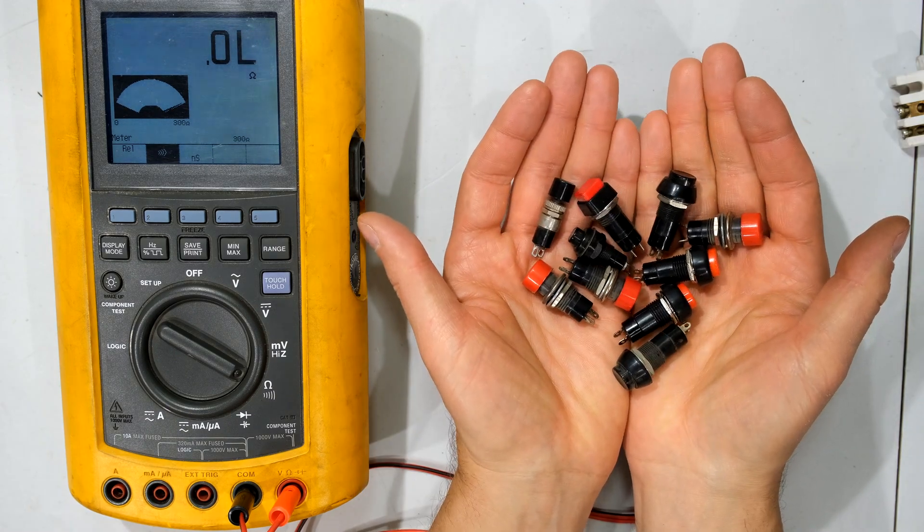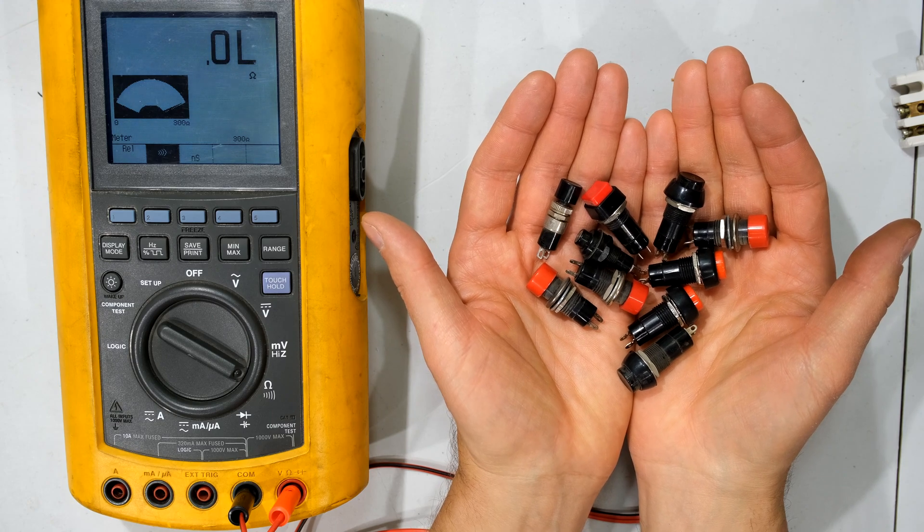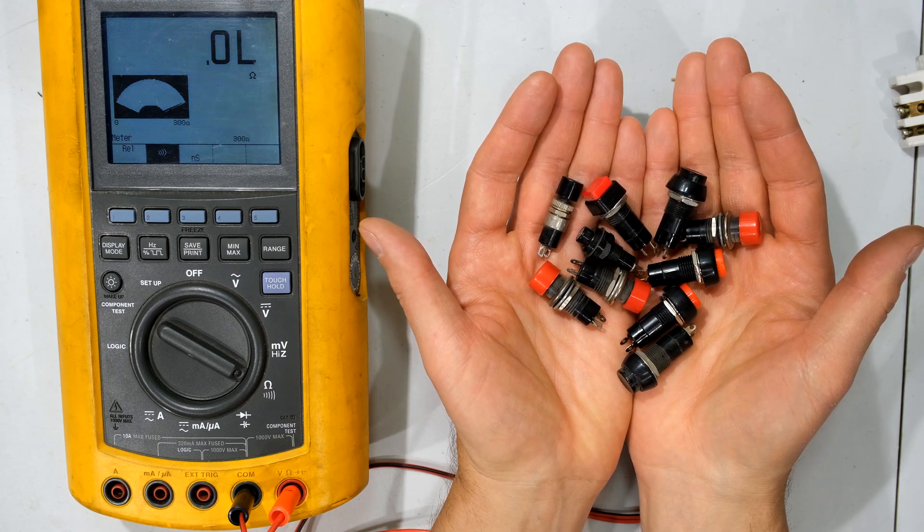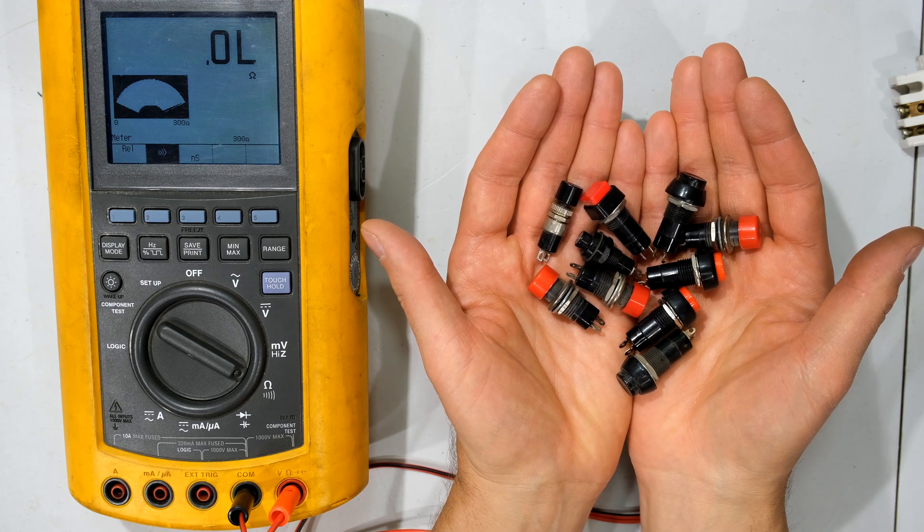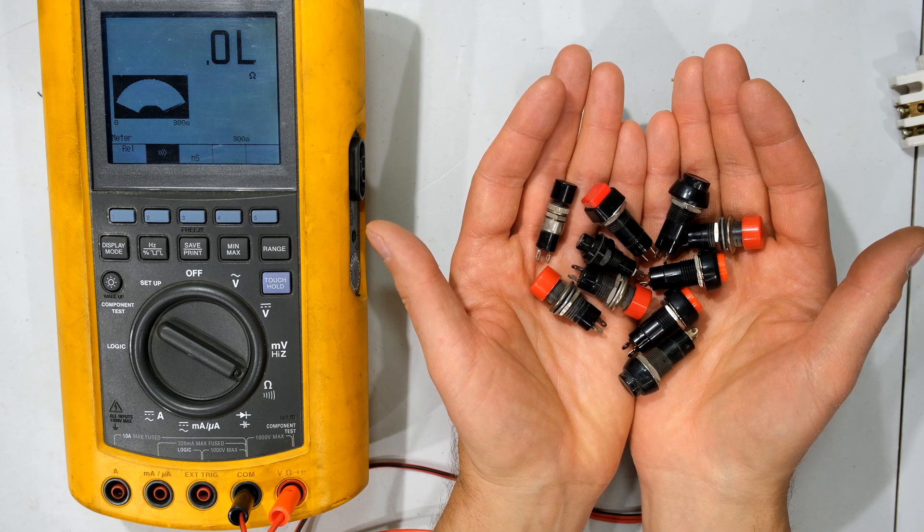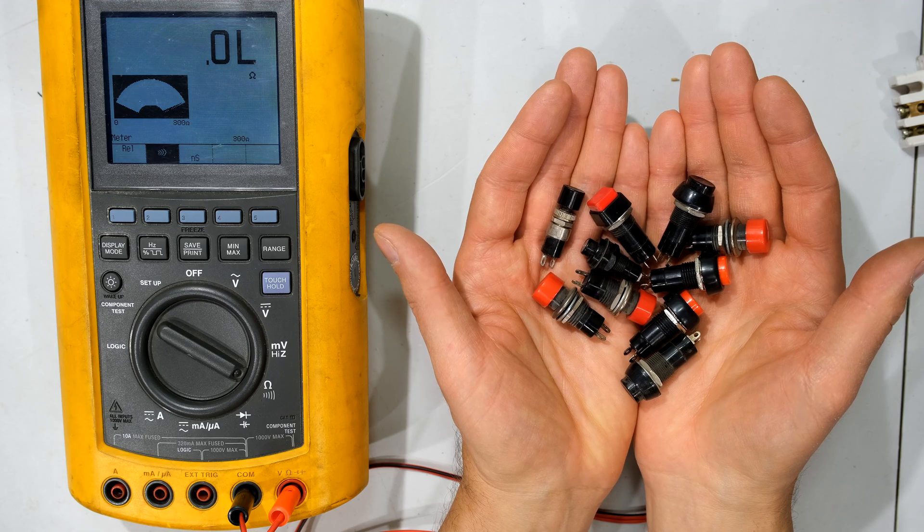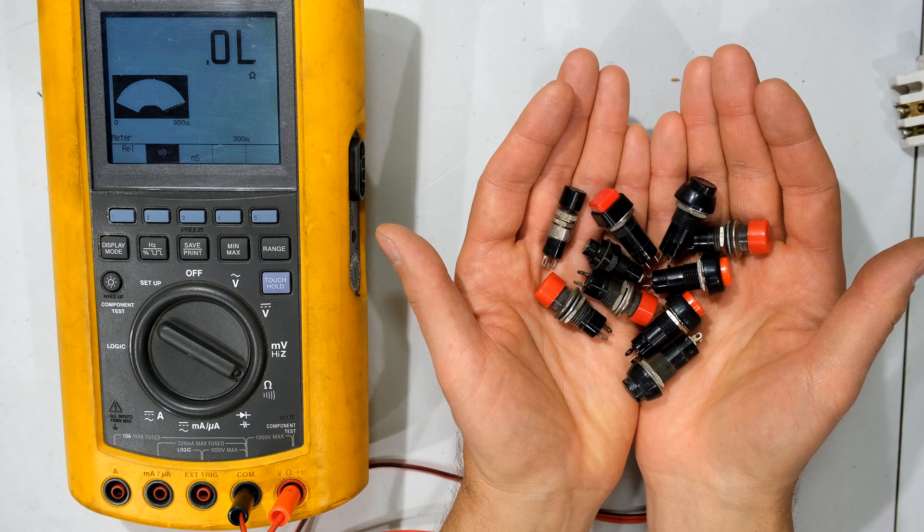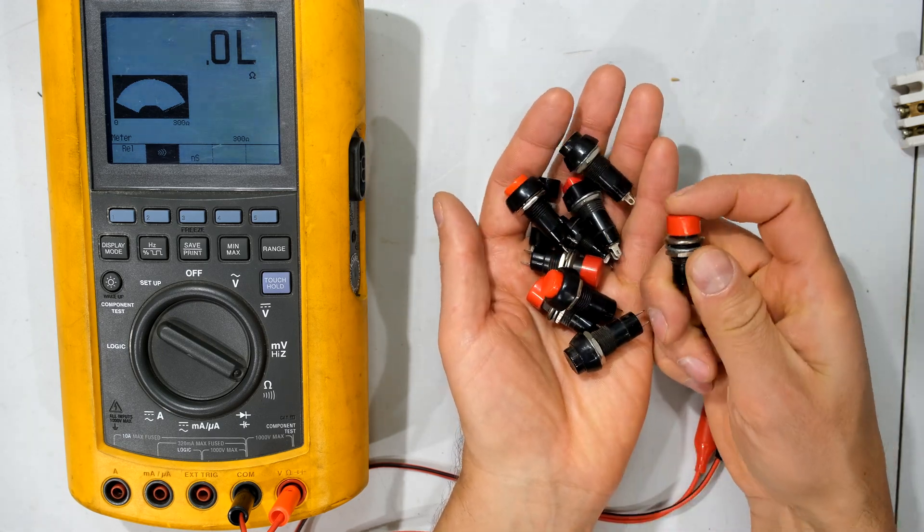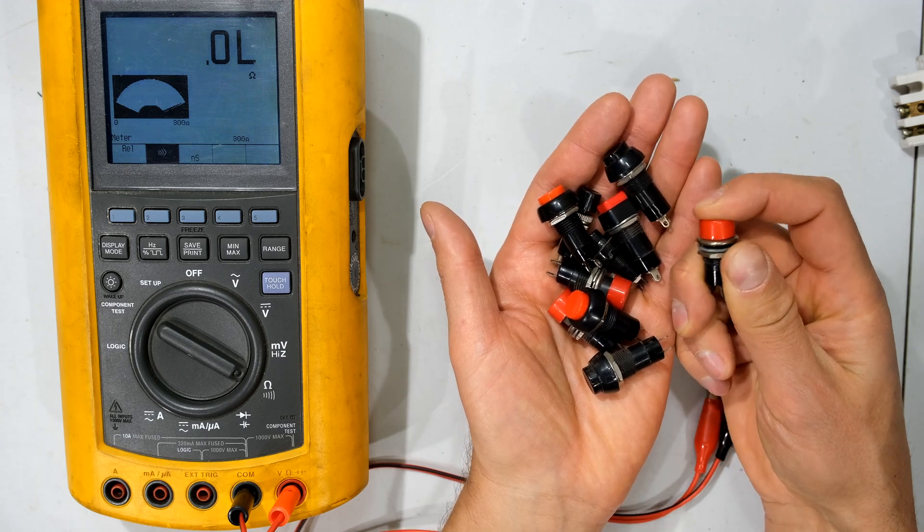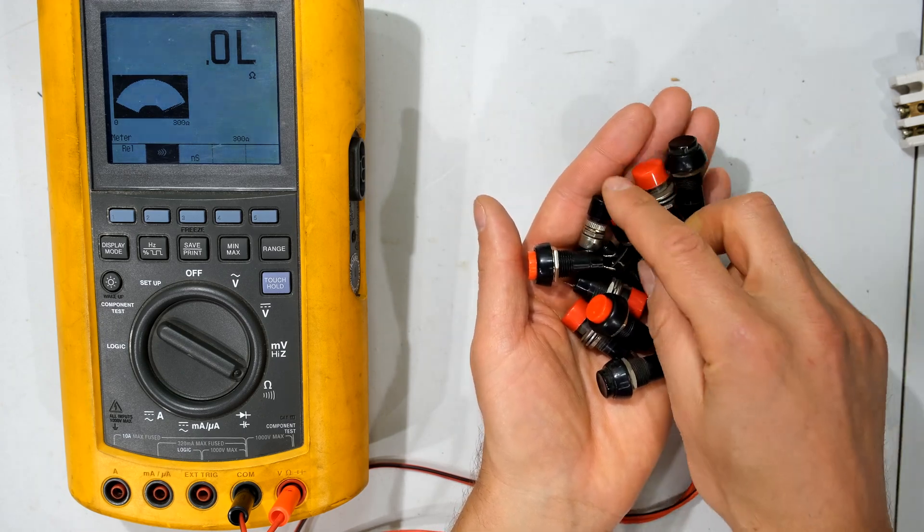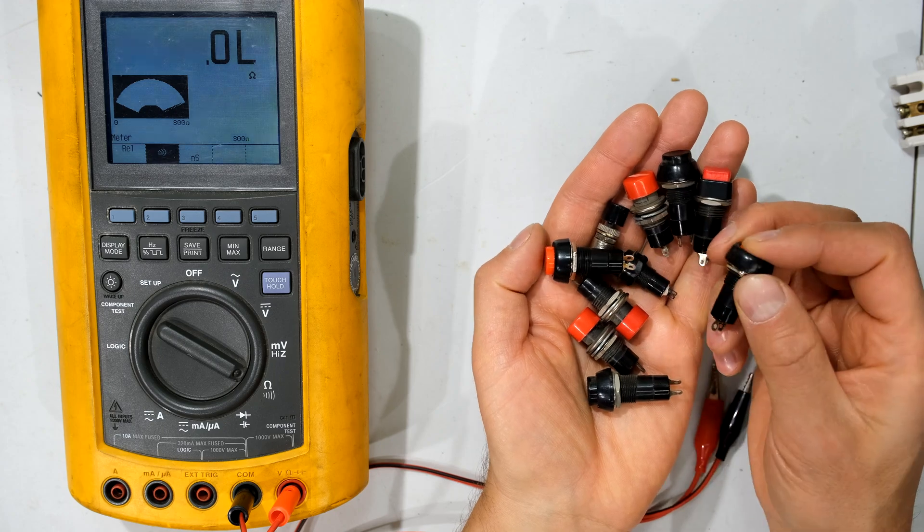Now over here I've got a variety of switches and just by looking at them you would not be able to tell which is a push to make and which is a push to break. Now the first thing is in the word push. So we can see that you have to depress something in order to operate the switch. So all of these have a push system. You can see I'm pressing it down, pressing it down, pressing it. These are all push button switches.